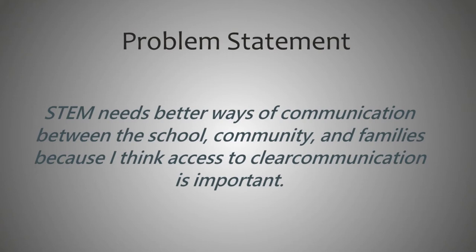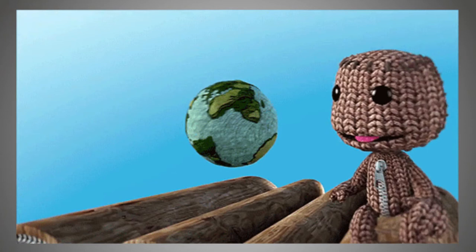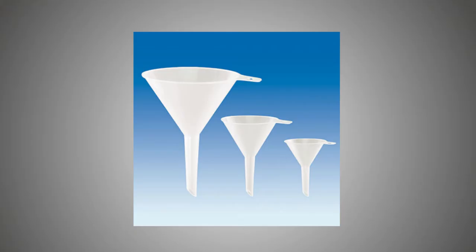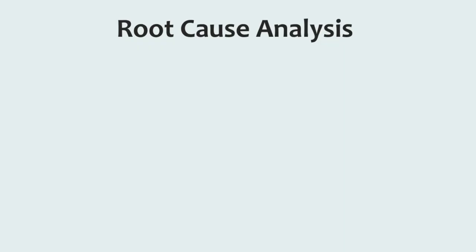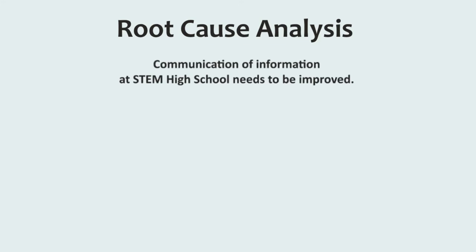This statement gave me a broad field of things I could do to solve it, but I wrote it with the intent of narrowing it later down the line when I decide exactly what I want to solve, other than merely improving communication. To achieve this, I created a root cause analysis map. On this, I took the broad problem I set out to alleviate and branched it out with other problems that contribute to it.